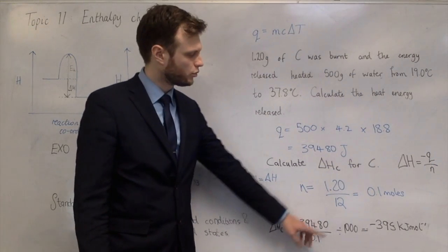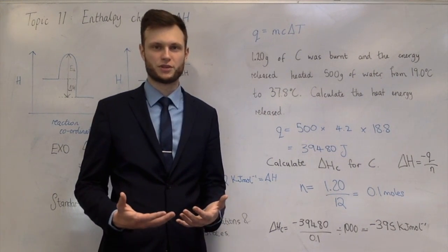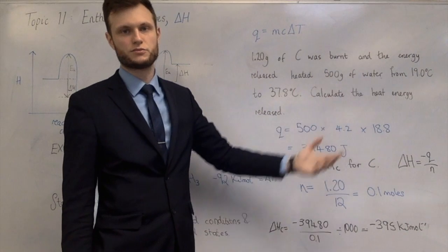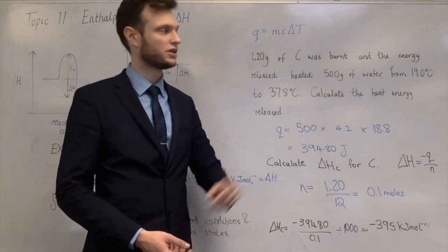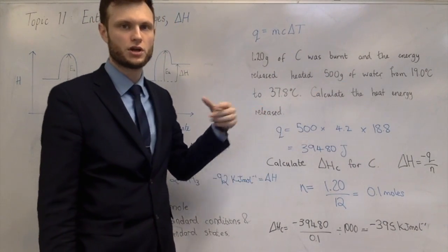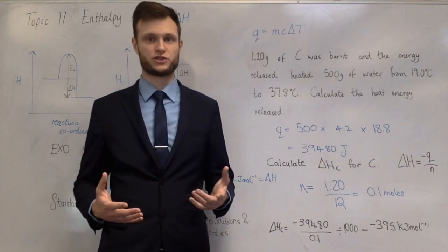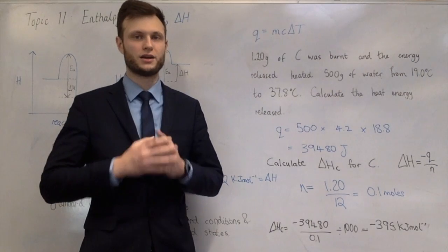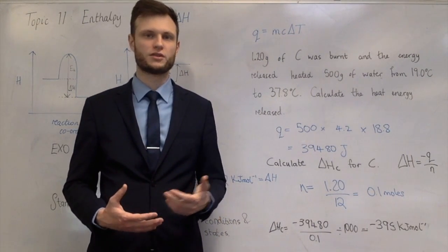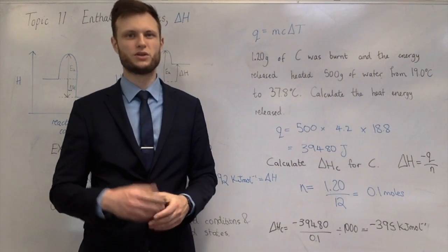This value will differ from the standard enthalpy change of combustion in the data tables for a few reasons. First, we didn't start at 298 Kelvin — we started at 19 degrees Celsius. Also, when burning carbon, not all of the heat goes into the water: some escapes into the atmosphere, heats the can, and so on. The experimental value is almost always less negative than the actual standard enthalpy change of combustion because heat is lost to other places.